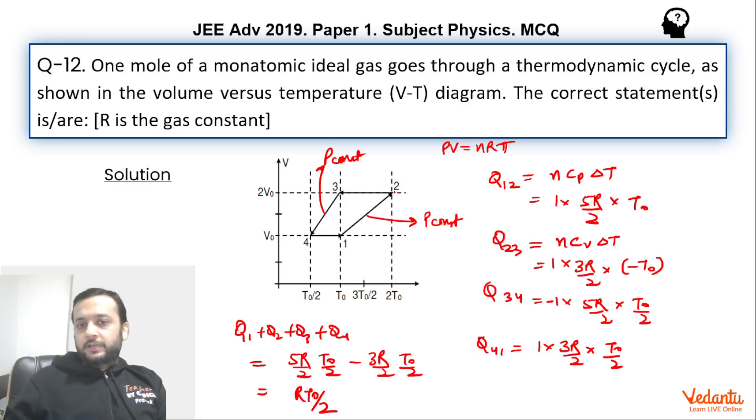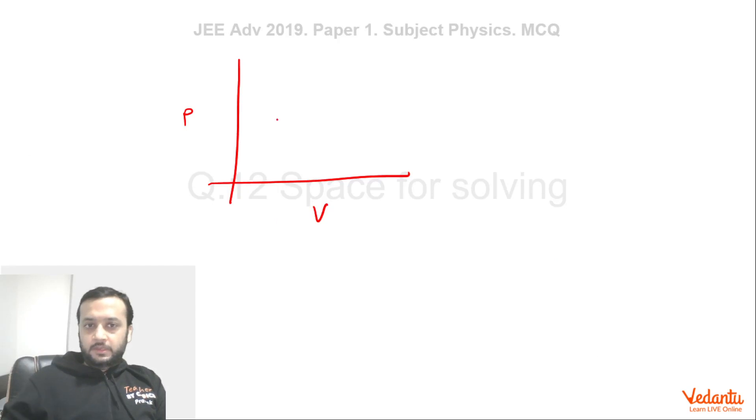If we start from point 1 and go to point 2, this was an isobaric process. The temperature was doubled isobarically. So if you double the temperature isobarically, then it's obvious that volume will also be doubled, as you can see. That means from 1 to 2, this would have been the thing. Let's say the pressure was P0 at point 1. Let's call pressure as P0 here. So this value will be P0. And this volume will be V0 and this volume will be 2V0.